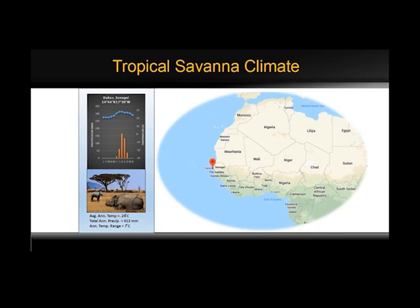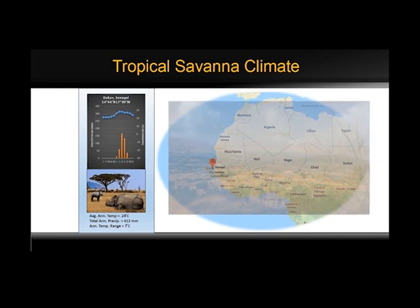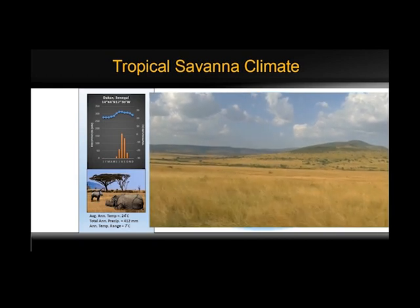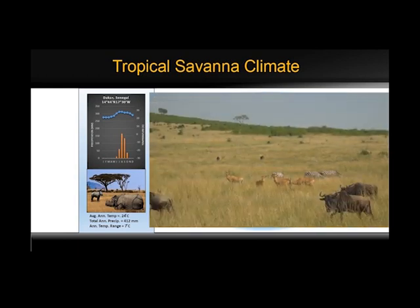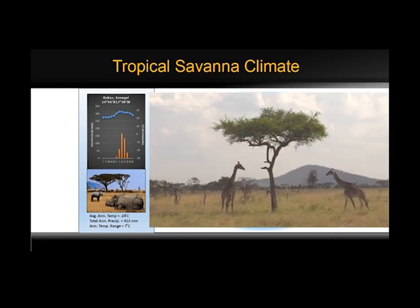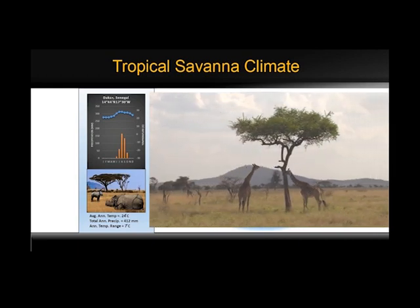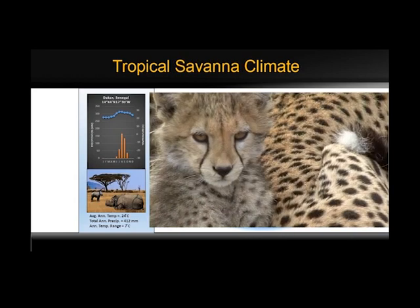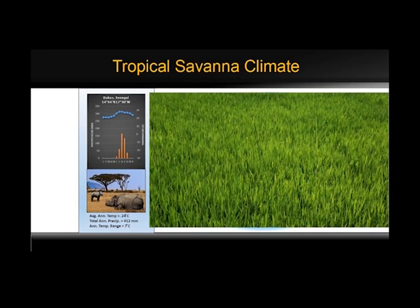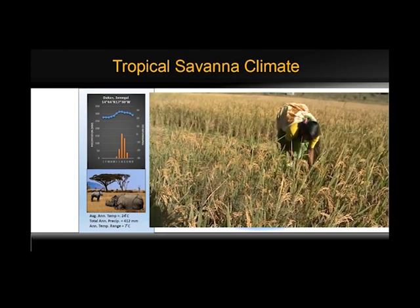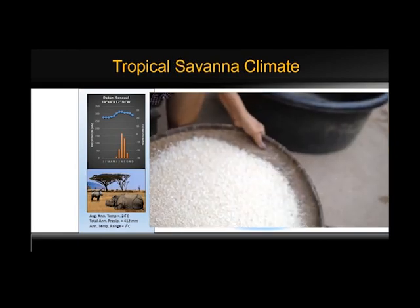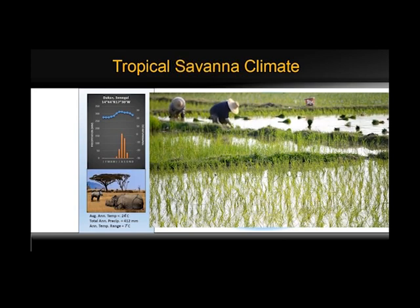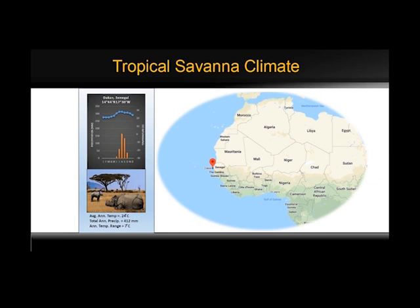The next subtype is the tropical savannah. A seasonal change occurs between wet tropical air masses and dry tropical air masses. As a result, there is a very wet season and a very dry season. Temperatures cool a little during the dry season, but become very hot just before the wet season. The temperature range is about 16 degrees Celsius. Annual precipitation is very low — less than 0.1 inches. Latitude ranges between 15 to 25 degrees north and south. Tropical savannah can be found in India, Indochina, West Africa, Southern Africa, South America, and the North Coast of Australia. As seen in the picture, precipitation is very little, and the trees are much less dense — that is the main characteristic of the tropical savannah climate.